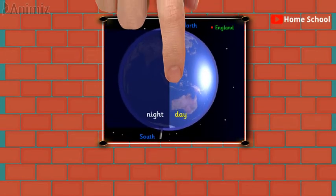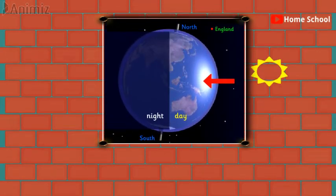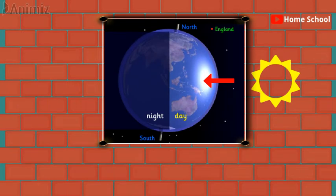What we can see here is that half of the Earth is getting sunlight because it is facing the Sun, while the other half is not getting sunlight because it is not facing the Sun. So the part which is facing the Sun is having day, and the part of the Earth which is not facing the Sun is having night.